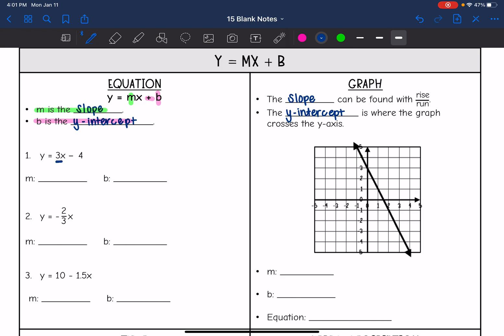On number 1, the slope is the number in front of x, which is 3, and the y intercept is the number by itself, which would be negative 4.